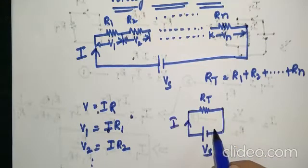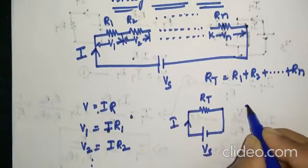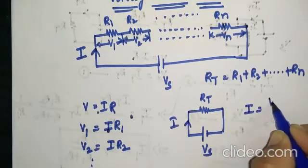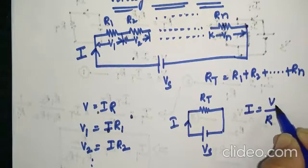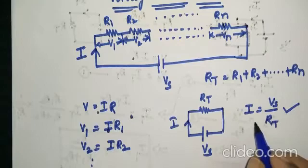Apply Ohm's law here and find the relation for current I. I is equal to V by R. Voltage is Vs, resistance is Rt. So we got the relation for I.